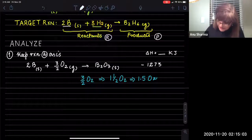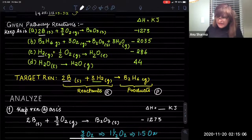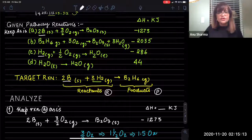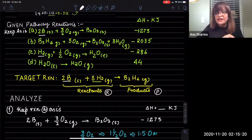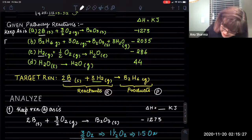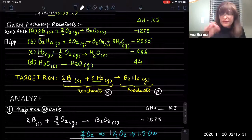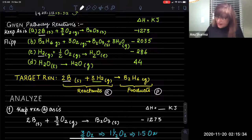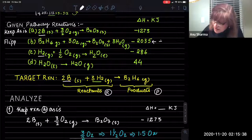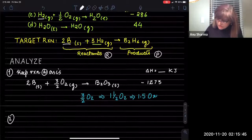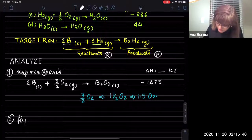Now let's look at the next pathway reaction, which involves B₂H₆. Match it with the target reaction. We see that B₂H₆ is on the reactant side in the pathway reaction, but B₂H₆ is on the product side in the target reaction. So look no further — you just have to flip it. There's no other choice. So we are going to flip or reverse reaction B, and when we do that, this delta H value becomes positive 2035 kilojoules.